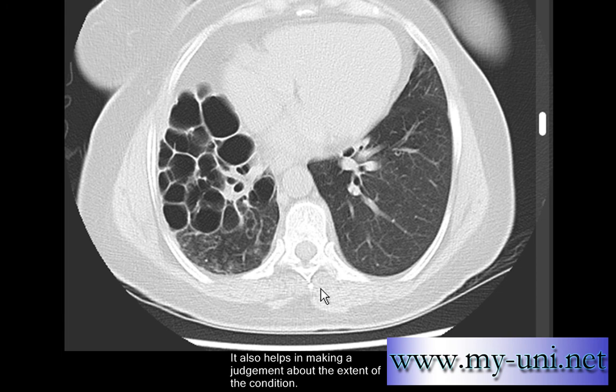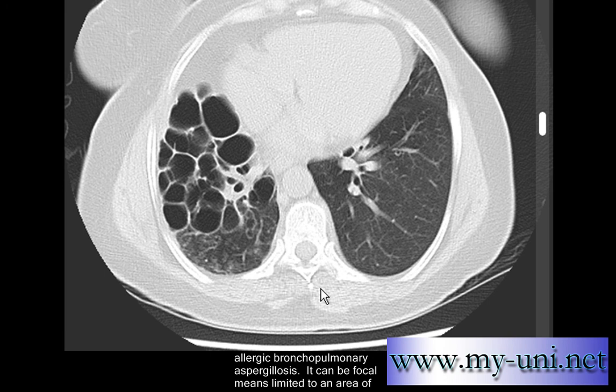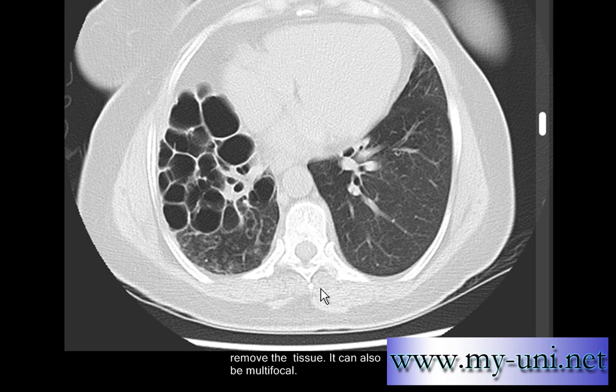HRCT also helps in assessing the extent of the condition. Bronchiectasis is a common complication of conditions like cystic fibrosis, tuberculosis, allergic bronchopulmonary aspergillosis, and bronchitis, which can also result from smoking. It can be focal — limited to one area or one lobe of the lung — in which case surgical removal of the tissue is usually feasible. It can also be multifocal.